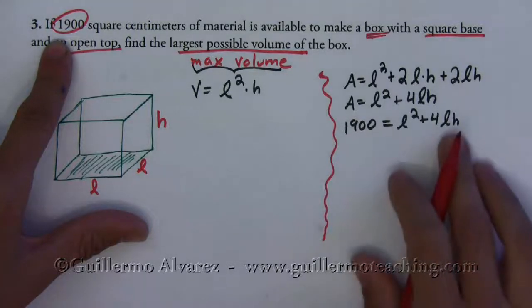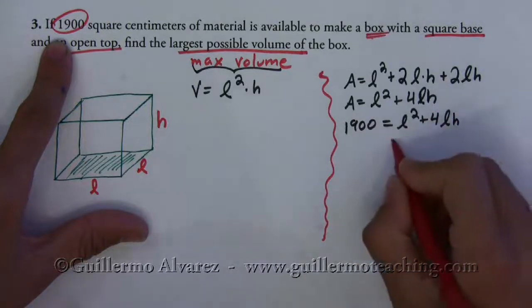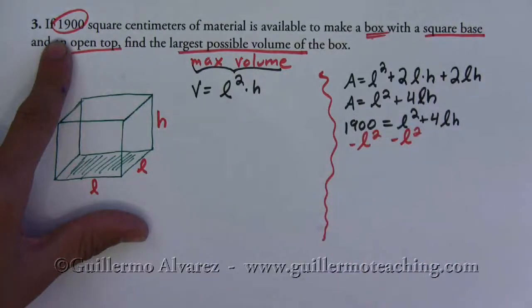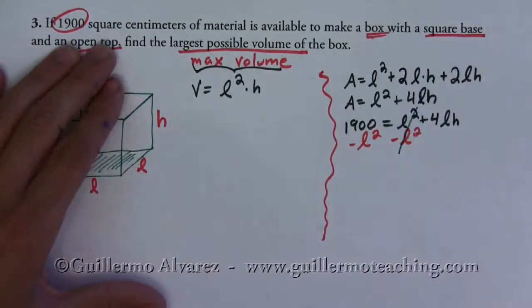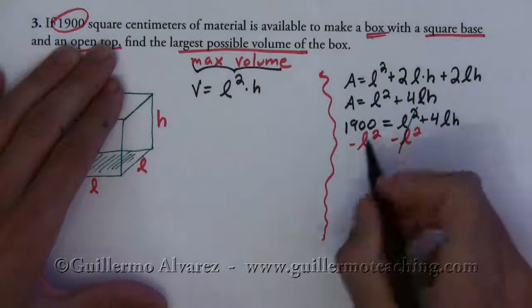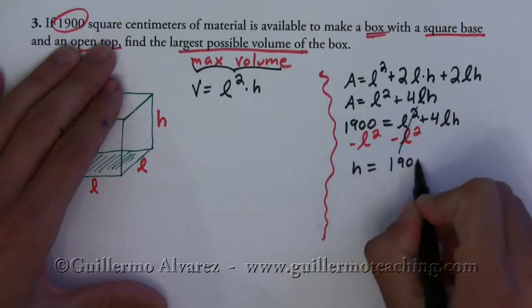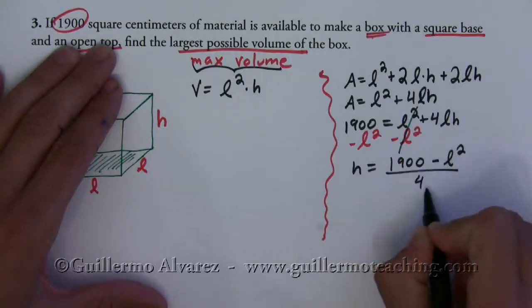And then we can solve for h here. We would just subtract l squared from both sides, and then after we've done that, we can divide by 4 l. So what we would get is that h is equal to 1900 minus l squared all over 4 l.